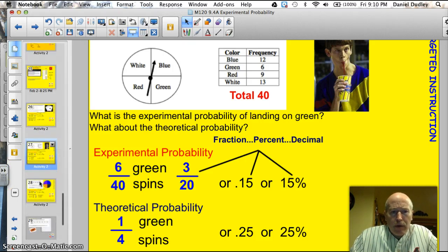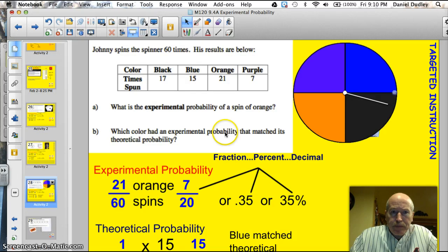All right, there's another example. And they like to do these kinds of problems here on tests, and I want to give you one. Johnny spins this spinner. Give it a spin. Come on, it won't spin. Well, there we go. Johnny spins this spinner 60 times, and his results are below. So he had 17 black, 15 blue, 21 orange. Wow, just like mine. And 7 purple.